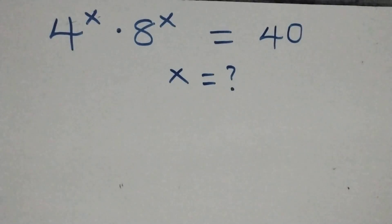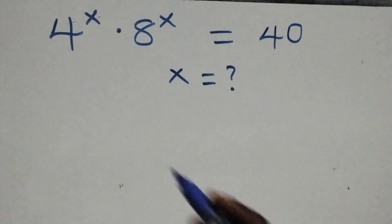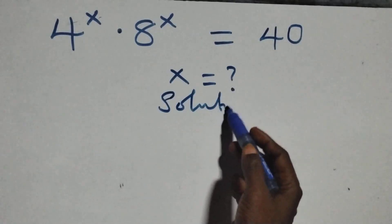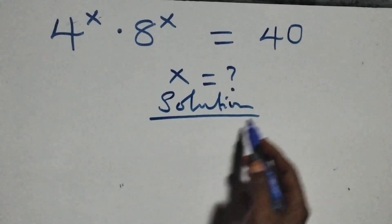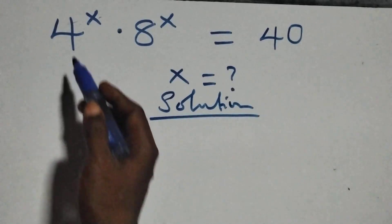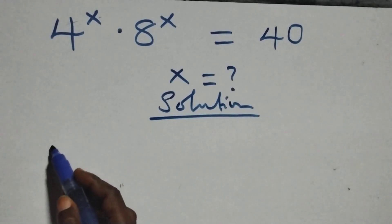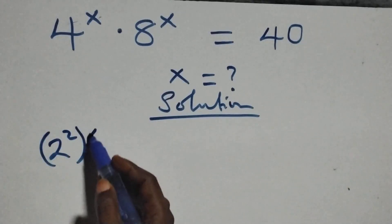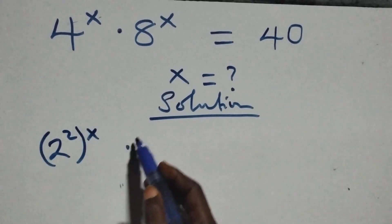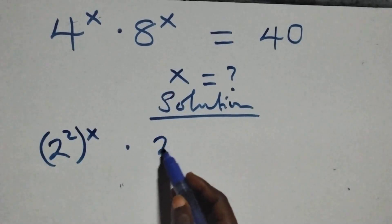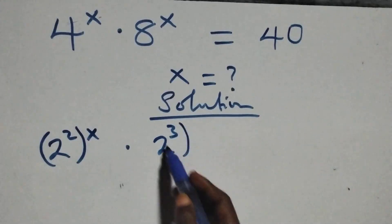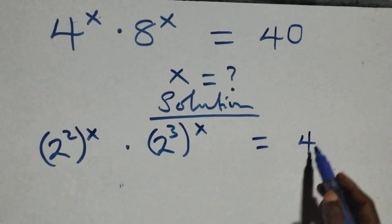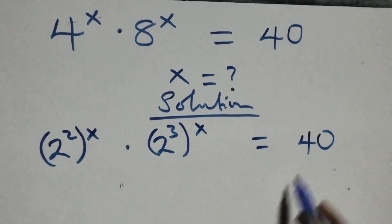Hello, you are welcome. How to solve this nice exponential equation. What we have here: x raised to 4 as 2 squared — at least this becomes 2 squared — raised to power x, times also 8 as 2 cubed, raised to power x, equals 40 on this side.